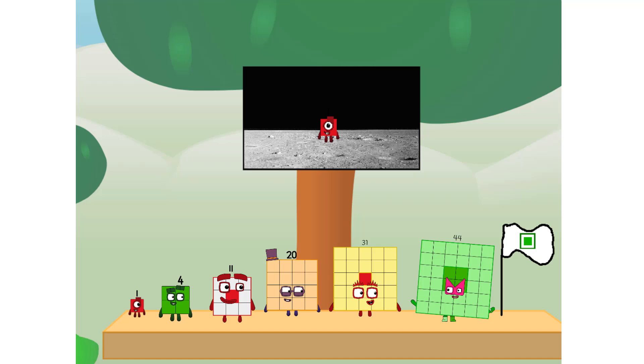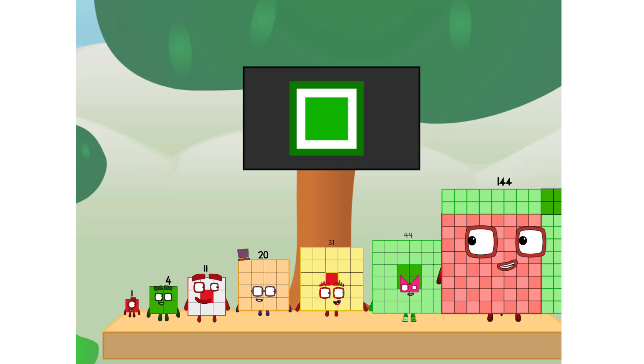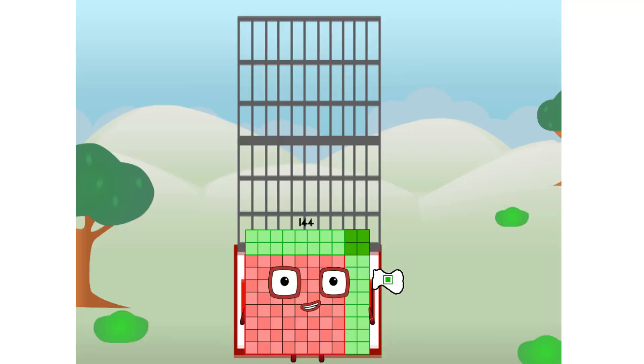The only thing left now is to plant the square club flag. Number land, we have a problem. I forgot the flag. Don't worry little one. I'll take care of this. One hand to the promise. No rockets. Square power only.